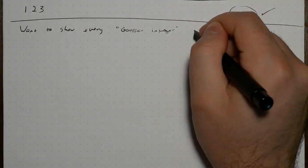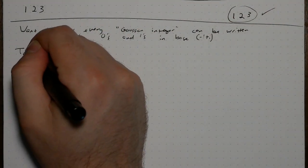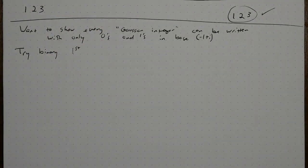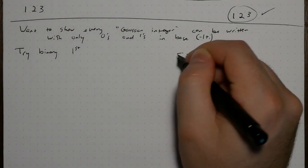This same process works for every base. We'll show that every complex integer can be written with just zeros and ones in base negative 1 plus i. Before we do that, let's look at binary, and try to understand why base 2 only needs 0 and 1.